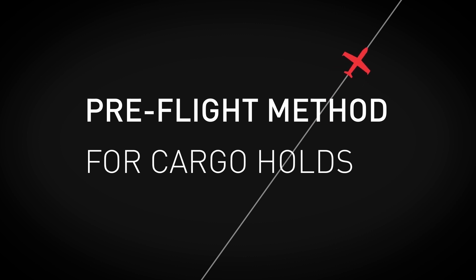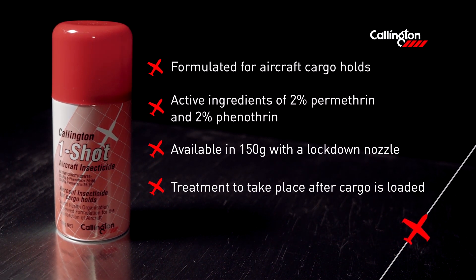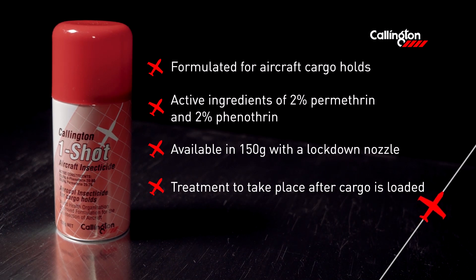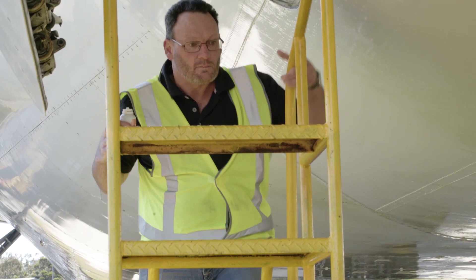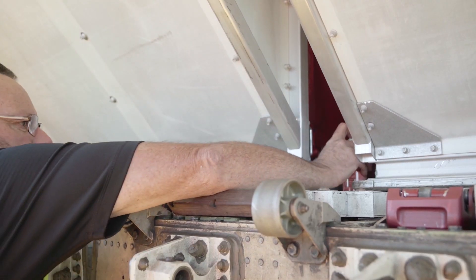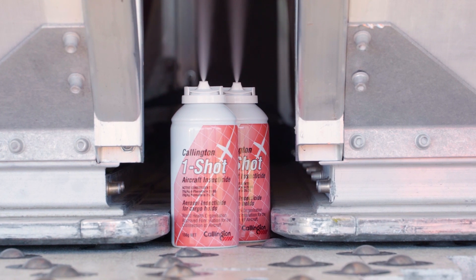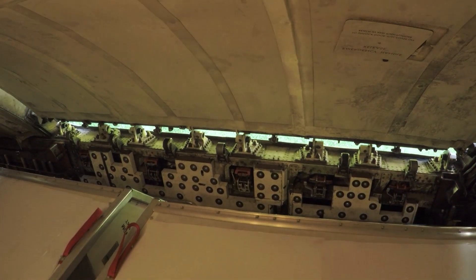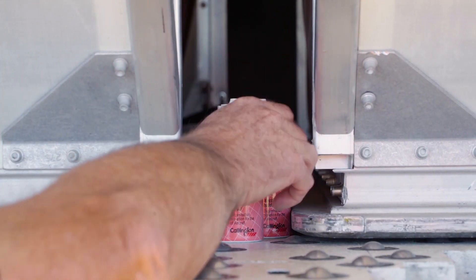As well as cabin areas, cargo holds must undergo disinsection. Cullington One-Shot is an aerosol insecticide formulated specifically for this section of the aircraft. Treatment must be carried out after all cargo has been loaded and just before the hold door is closed. Since aerosols may set off smoke alarms, be sure to advise the crew that hold spraying is about to commence. As the lower cargo door is being closed, leave just enough of an opening to stand a single One-Shot can between cargo containers. Hold the nozzle down to activate the aerosol. If more than one can is required, repeat this application method with additional product. When you see that the spray has been activated, close the hold door immediately, leaving the cans in place to complete the disinsection process. Once the aircraft has reached its destination, the exhausted cans are to be collected by ground handlers.